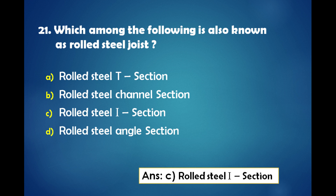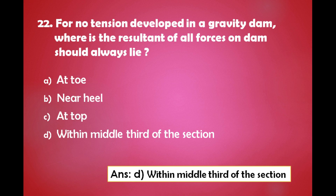Which among the following is also known as rolled steel joist? A) Rolled steel T-section, B) Rolled steel channel section, C) Rolled steel I-section, D) Rolled steel angle section. The answer is: a rolled steel I-section is also known as rolled steel joist.